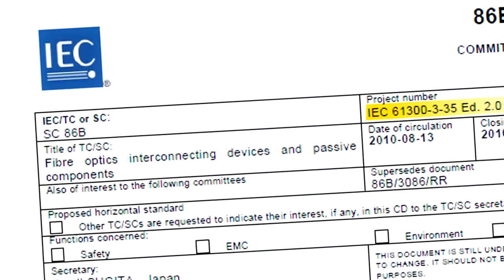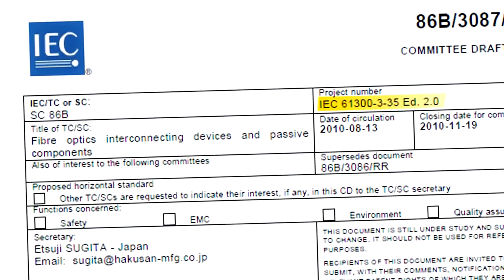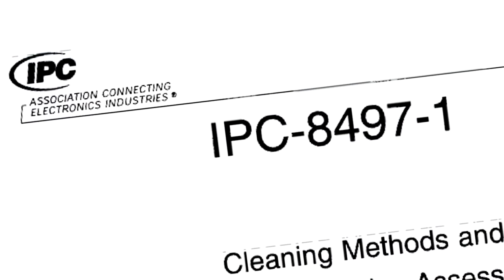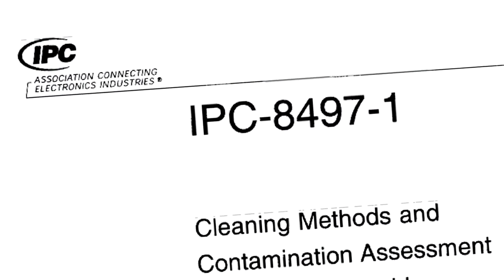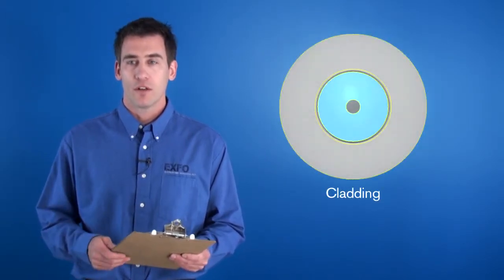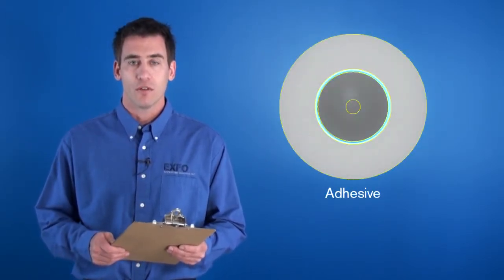Standards including the IEC 61300-3-35 and the IPC 8497-1 are listing the criteria for in-phase inspection. Depending on the zone where the defect or dirt is, different size and count are allowed.